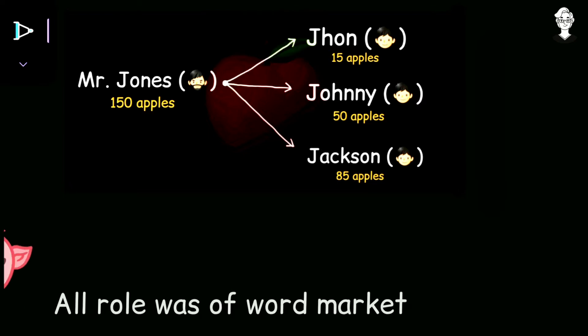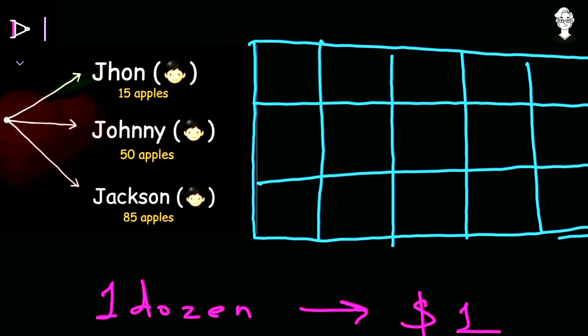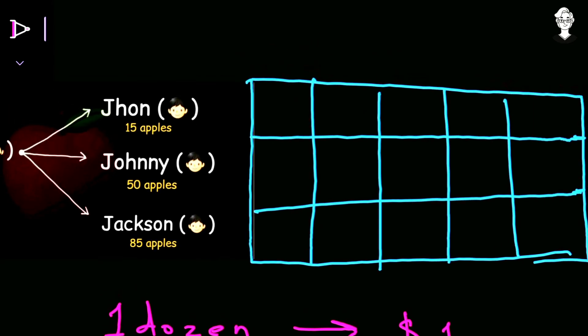So for that let me make a table so everything will be clear. So here is the table ready. First of all, what they will do is they will sell one dozen of apples. One dozen means 12 apples, so one dozen of apples at a price of $1.